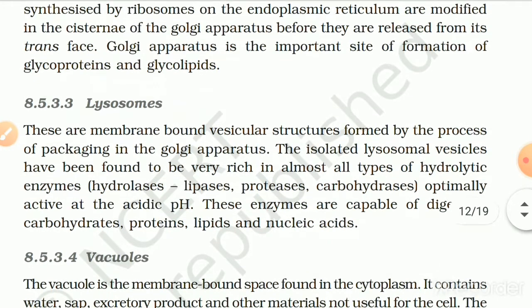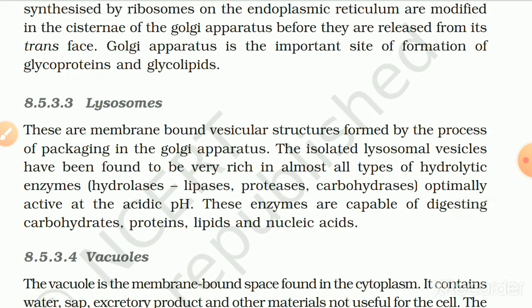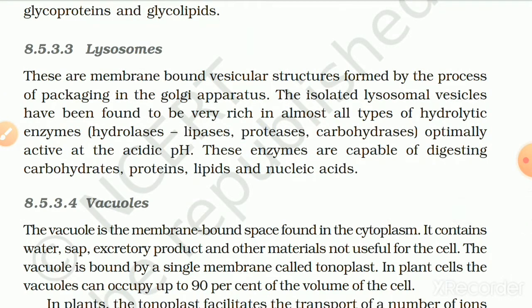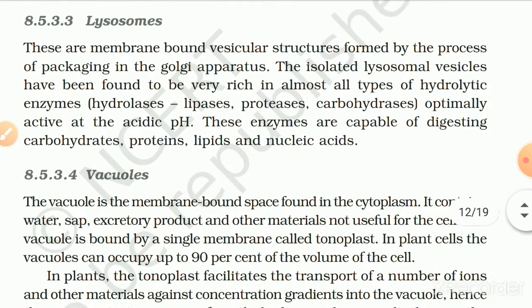A number of proteins synthesized by ribosomes on the endoplasmic reticulum are modified in the cisternae of the Golgi apparatus before being released from its trans phase. The Golgi apparatus is an important site for the formation of glycoproteins and glycolipids. 8.5.3.3 Lysosomes. These are membrane-bound vesicular structures formed by the process of packaging in the Golgi apparatus. Isolated lysosomal vesicles have been found to be very rich in almost all types of hydrolytic enzymes — lipases, proteases, and carbohydrases — optimally active at acidic pH. These enzymes are capable of digesting carbohydrates, proteins, lipids, and nucleic acids.